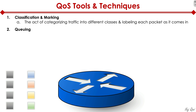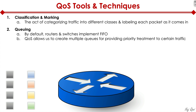Once packets are labeled, the next step is defining queues. Because if incoming traffic exceeds outgoing bandwidth capacity, traffic has to sit in a queue. By default, routers and switches implement FIFO — First In, First Out — which is not really quality of service; it's just first come, first served. FIFO is fine at a restaurant or movie line, but it's an absolutely terrible way of dealing with network traffic. QoS allows us to create multiple queues for providing priority treatment.